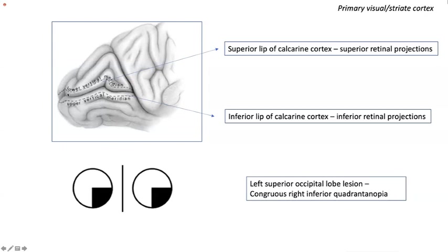There are two lips of the calcarine cortex: the superior lip receives projections from the superior retina, and the inferior lip from the inferior retina. The superior retina subserves the inferior visual field. If a lesion is limited to one lip of the calcarine sulcus, it produces a defect respecting the horizontal meridian — a quadrantanopia. For example, a left superior occipital lip lesion produces a right inferior quadrantanopia.